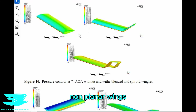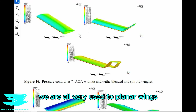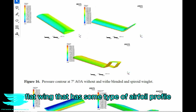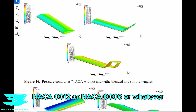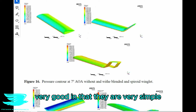Non-planar wings — they are a little known secret among aerodynamicists. We are all very used to planar wings. Planar wings are just a standard flat wing that has some type of airfoil profile, whether that's a NACA0012 or NACA0006 or whatever. And planar wings are very good in that they are very simple.